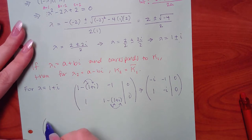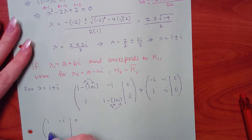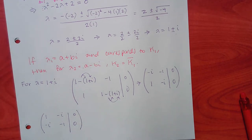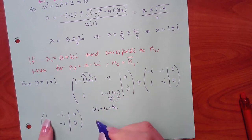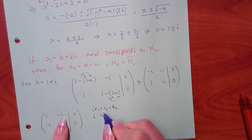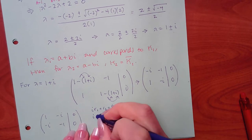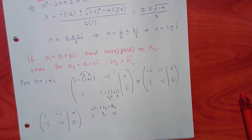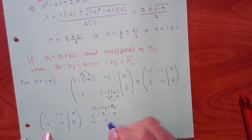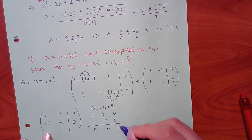After swapping, we need the bottom entry to become zero. Multiply row 1 by positive i and add to row 2. We get i times 1 is i, i times negative i is negative i-squared which equals positive 1, and i times zero is zero. Adding row 2 gives all zeros.